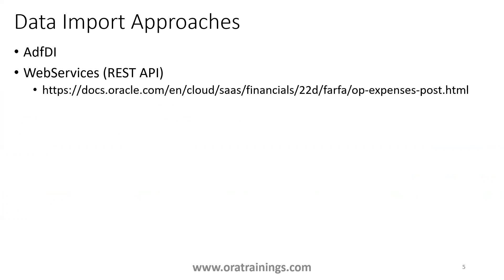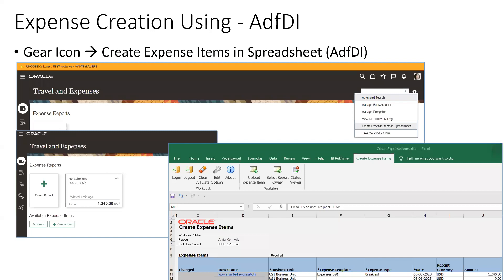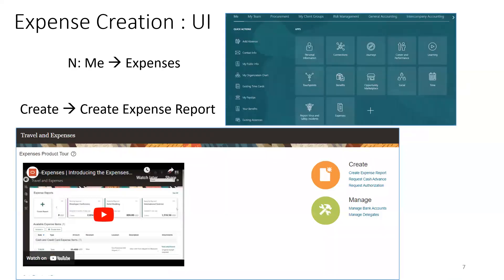There is no FBDI approach available to perform data migration for expenses. If you want to bulk upload and it's a small quantity, you can go with ADFDI; if it's a huge quantity, REST API is preferred. To create an expense report using ADFDI, navigate to the travel and expense module, click on the gear icon, and select 'Create expense items in spreadsheet.' It will download the ADFDI Excel file. Enter your data, click 'Upload expense item,' and the expense report or expense item will get created in the instance.